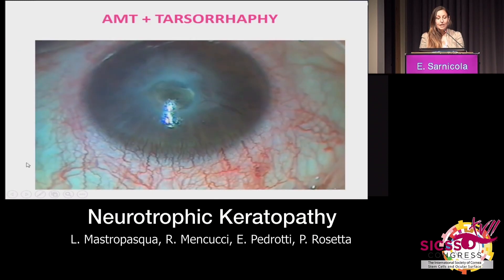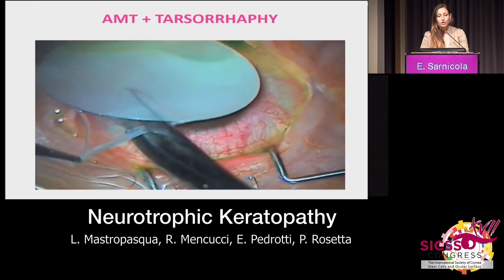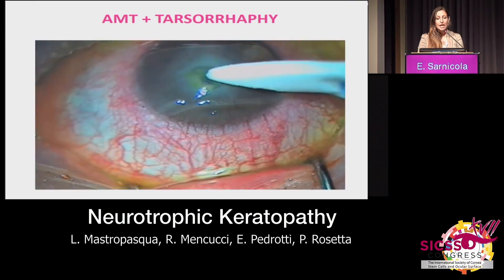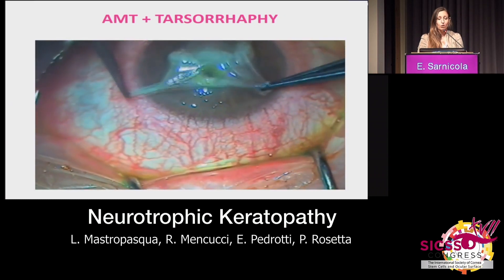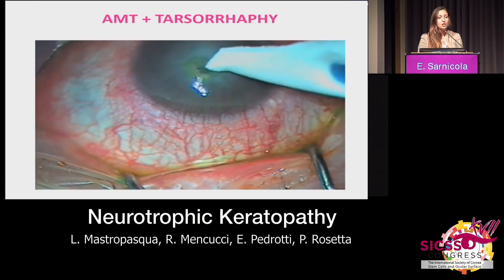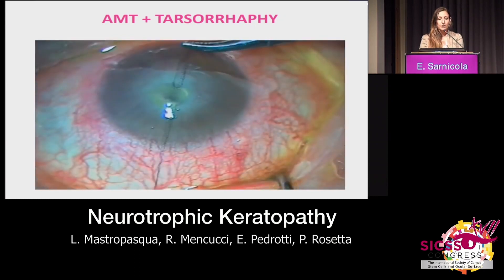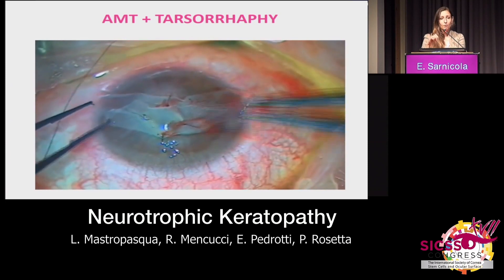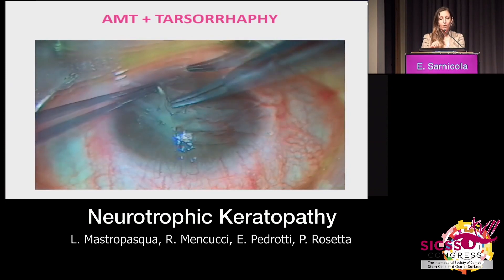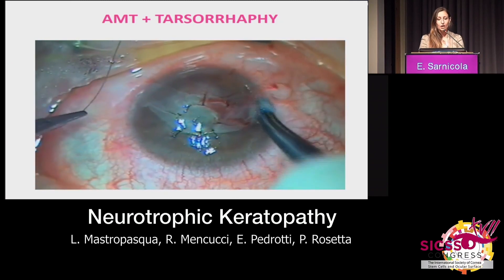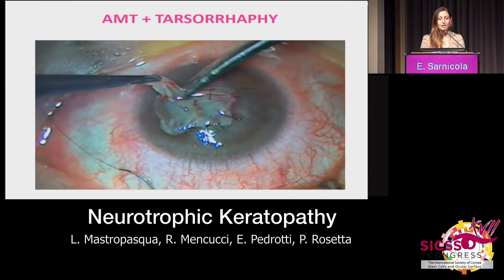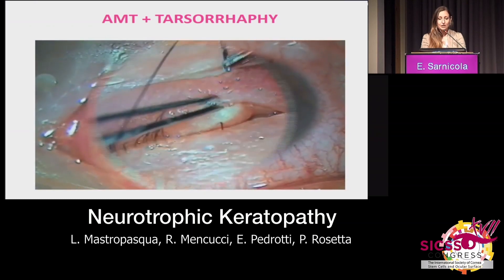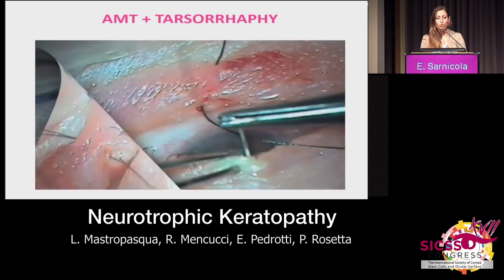Not all patients come to us with a diagnosis already made — sometimes they come with a perforation. This patient had a herpes history. A tarsorrhaphy can be performed, plus an amniotic membrane transplant. The amniotic membrane wipe is used and adheres to the stromal layer, and then a multi-layer is added to provide thickness and close the corneal defect. This is quite a simple procedure.